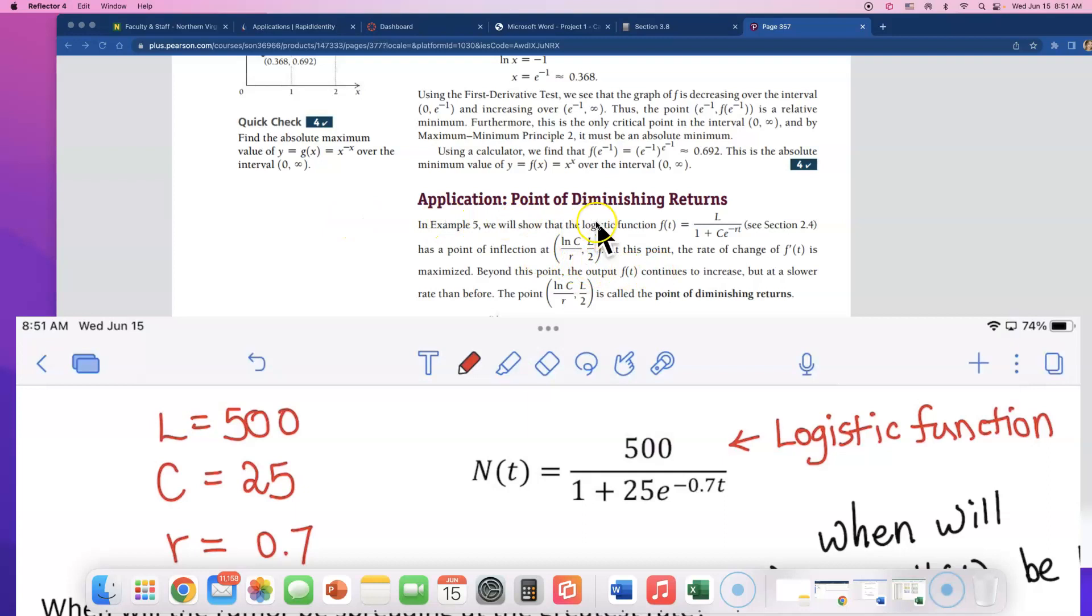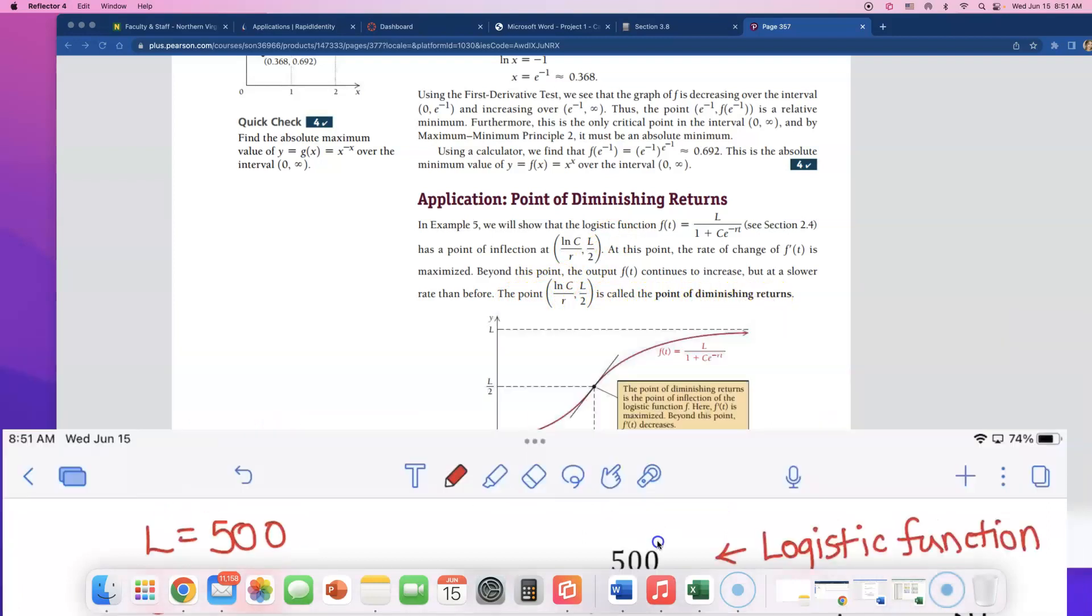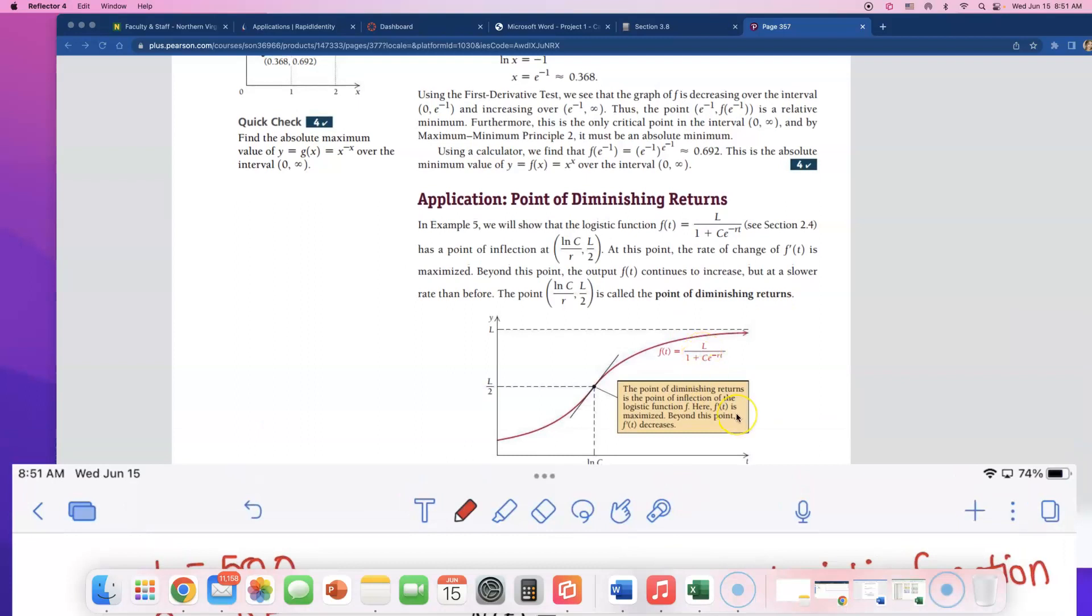In this section, it kind of goes on and talks a little more about why this point is. It's actually the answer for this problem. This point is called the point of diminishing returns. If you read this textbook a little bit further, in this orange box, the point of diminishing returns is the point of inflection of the logistic function f. Look at this part: f prime of t is maximized.